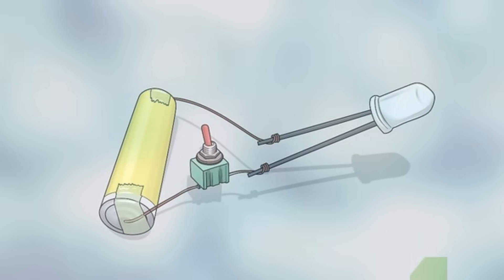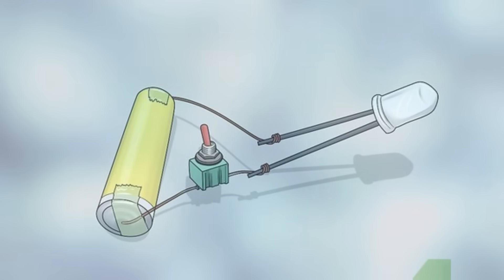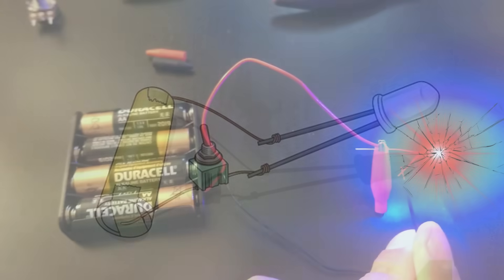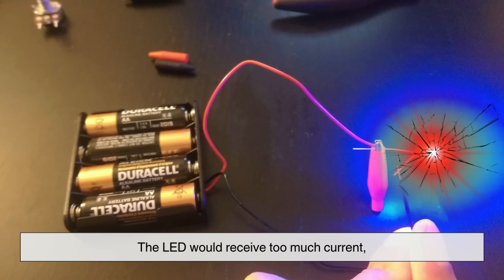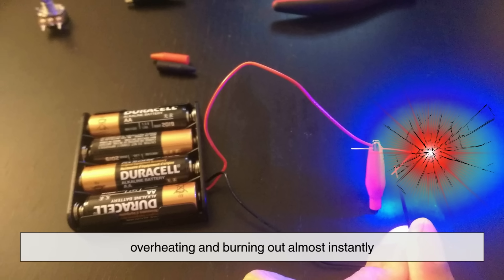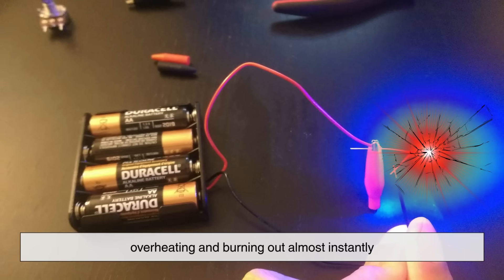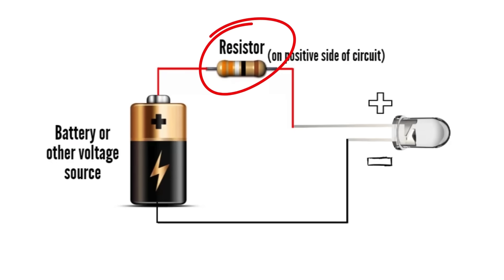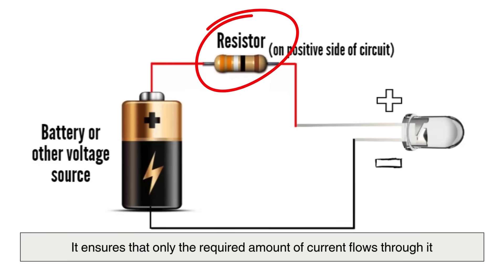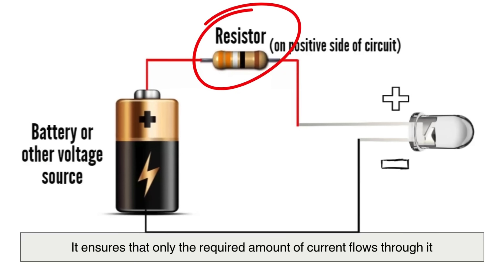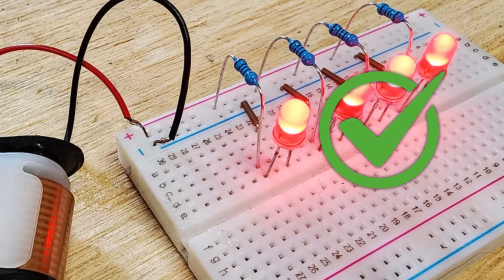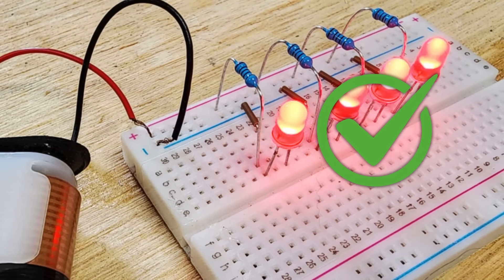But why do circuits need resistors in the first place? Imagine an LED connected directly to a power source without a resistor. The LED would receive too much current, overheating and burning out almost instantly. A resistor in series with the LED ensures that only the required amount of current flows through it, preventing damage and ensuring proper operation.